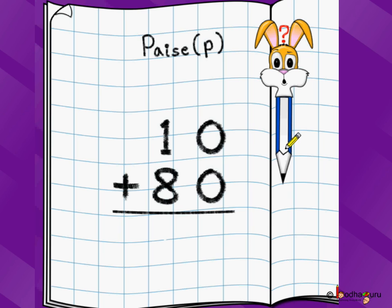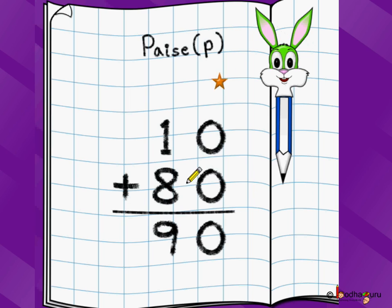Let's say we have 10 paisa and we got 80 more paisa. We write paisa at the top because that is the unit which we are taking in this problem. We had 10 paisa and we got plus 80 more paisa. One's position below one's position, 10's position below 10's position. So how do we do this addition? We add 0 plus 0 is 0, 8 plus 1 is 9. So we have 90 paisa now.